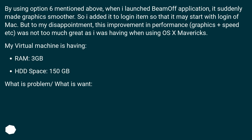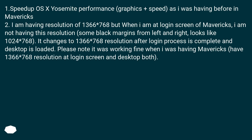What is the problem and what do I want? First, I want to speed up OS X Yosemite performance — graphics plus speed — to match what I had in Mavericks. Second, I am having a resolution of 1366x768, but at the Yosemite login screen I don't get this resolution. There are black margins on the left and right, looking like 1024x768. It changes to 1366x768 after login completes and the desktop loads. This was working fine in Mavericks, with 1366x768 at both the login screen and desktop.